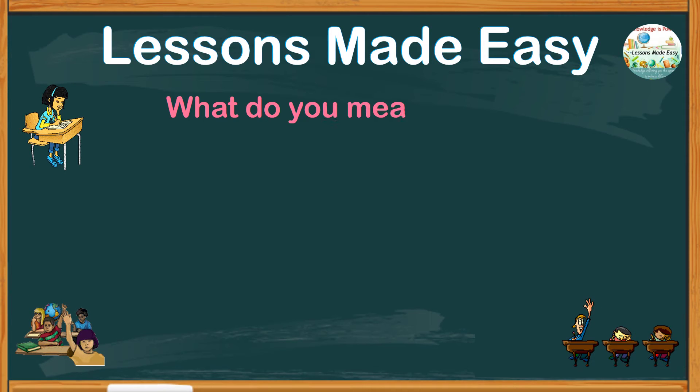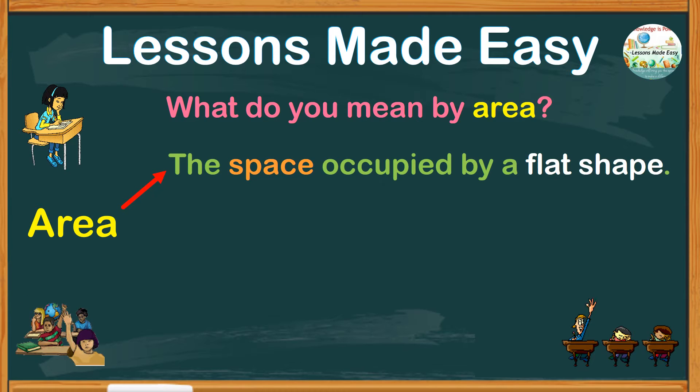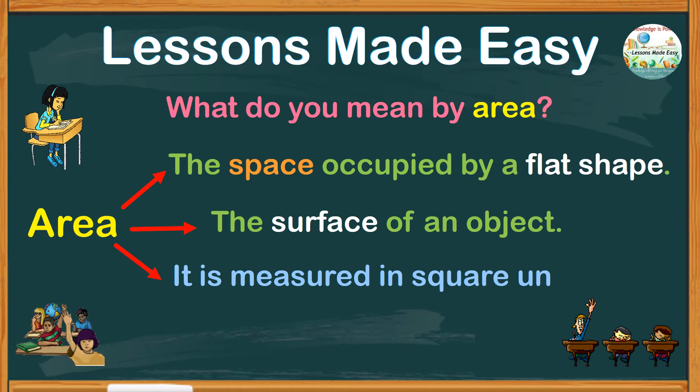Let's have a quick review. What do you mean by area? When we talk of area, we are referring to the space occupied by a flat shape. We can also say that it is the surface of an object, and it is measured in square units. Centimeter, meter, and kilometer are just some examples of what we call units.